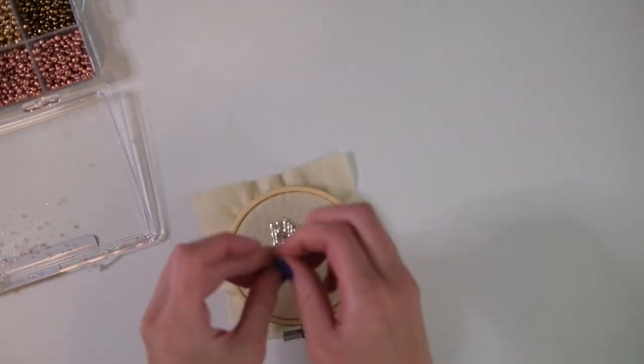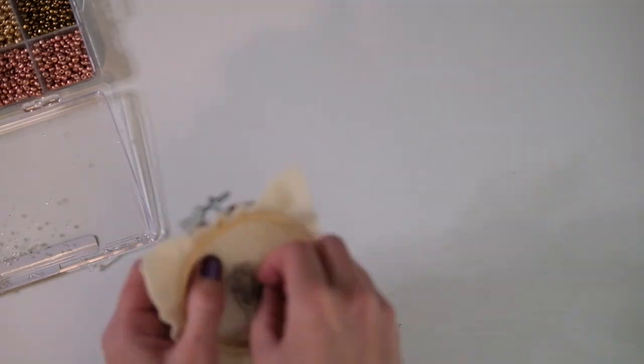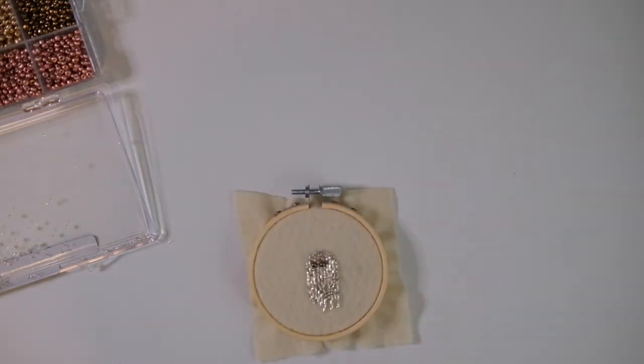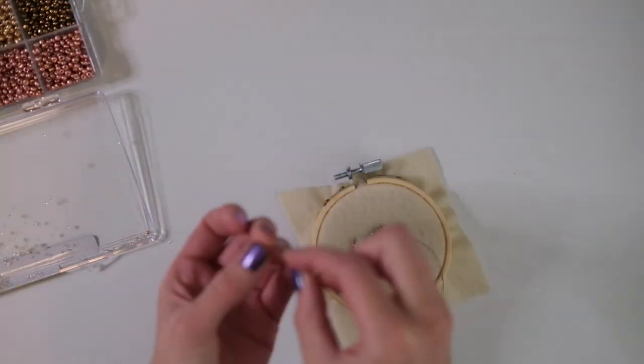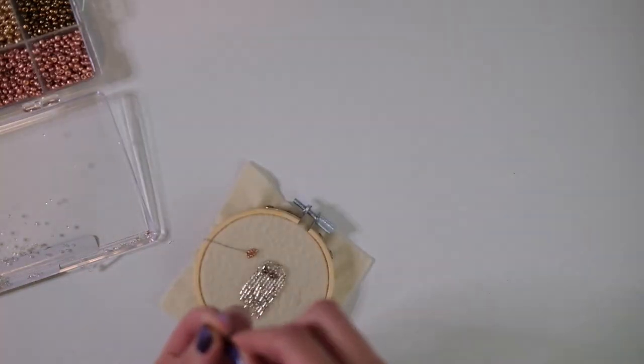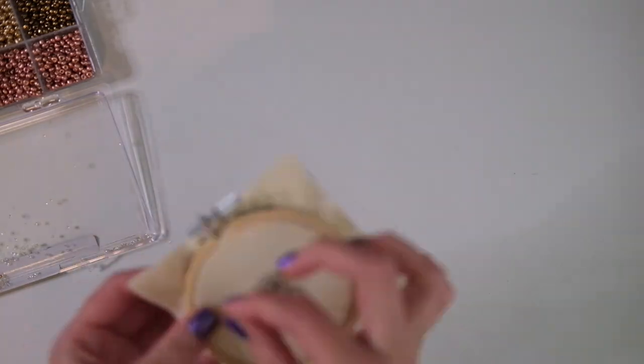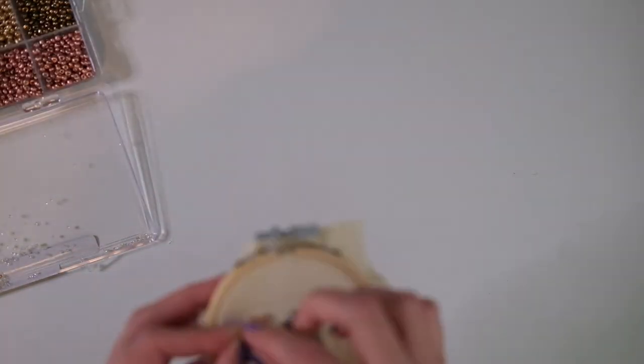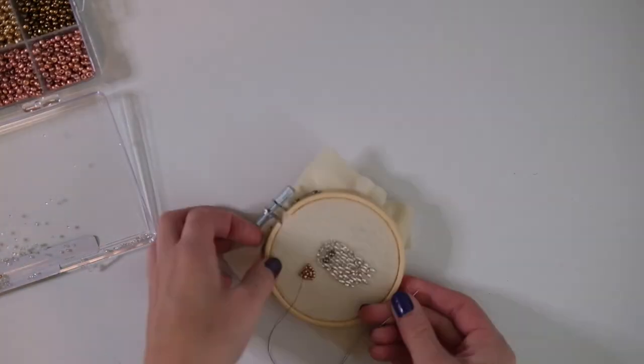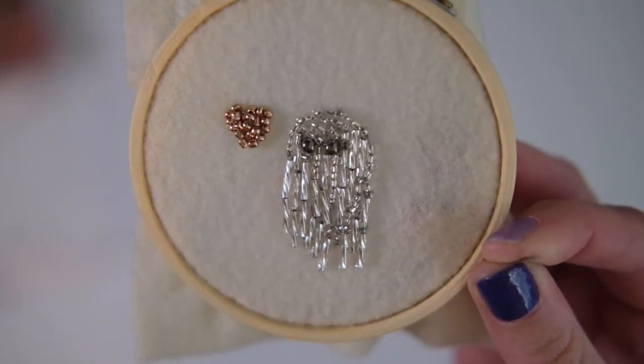Like I said, with this design it was really hard to keep it centered. I really should have left more felt on the outside of the embroidery hoop so I could adjust it after my design was done, but I really didn't have room to move it around and make it centered. So I decided to use some of the copper toned seed beads to make a heart next to the ghost. To finish these, I just cut the felt flush with the embroidery hoop.